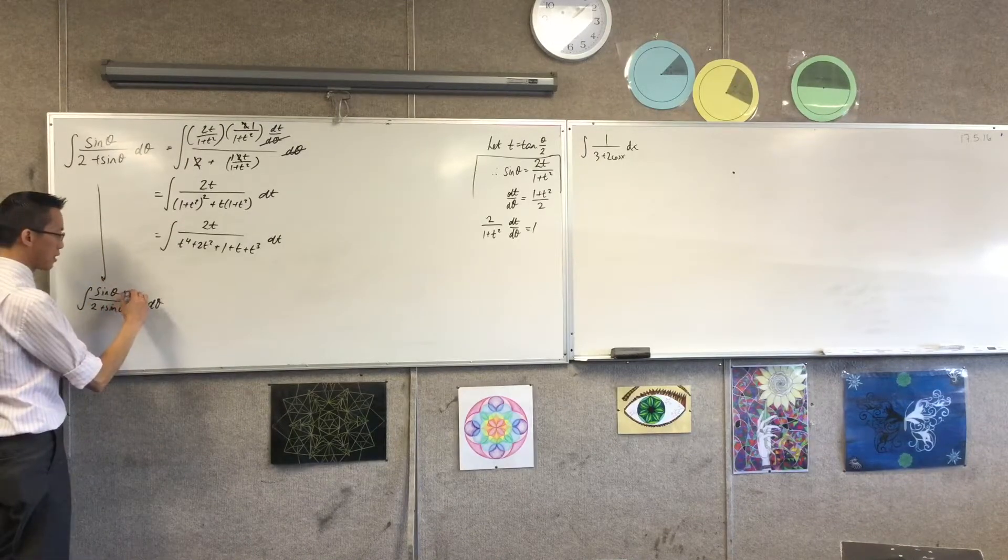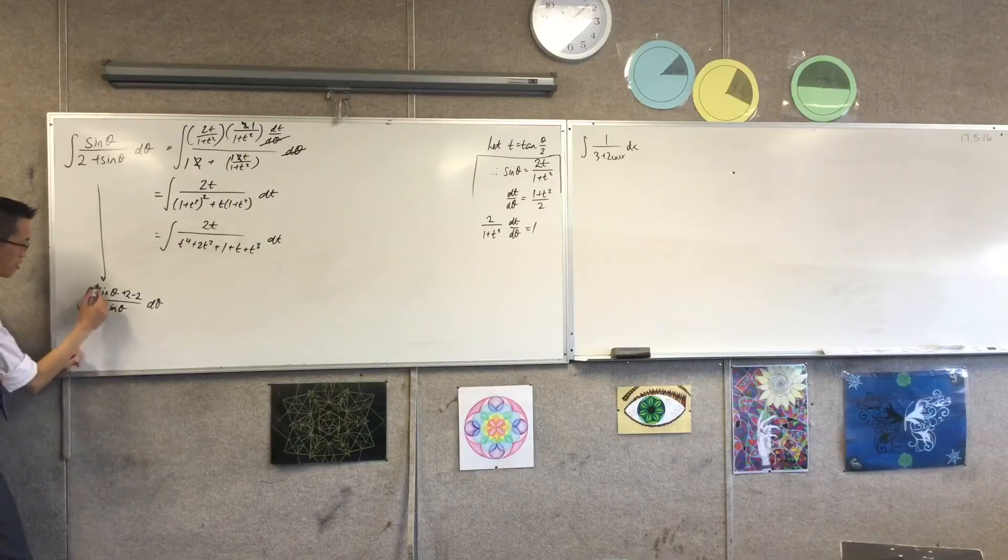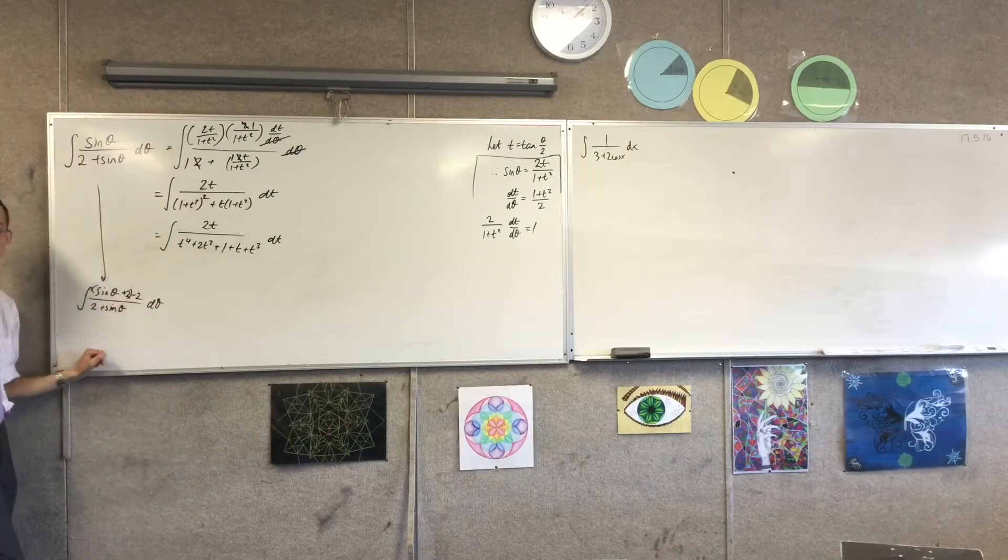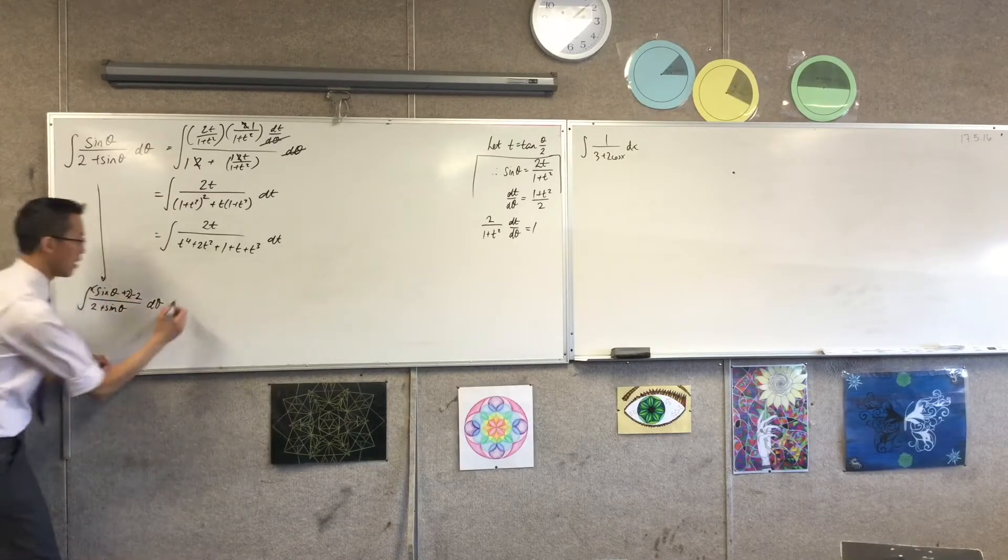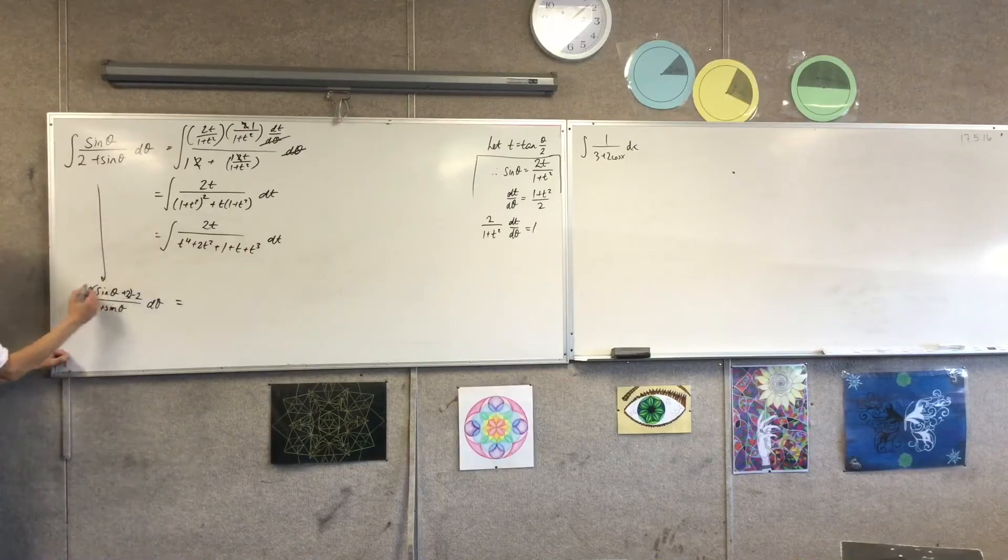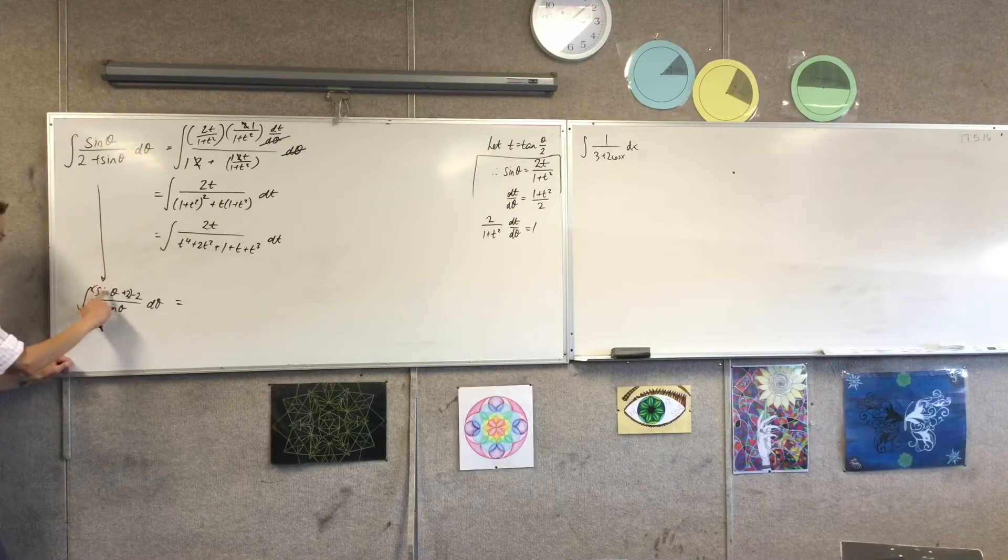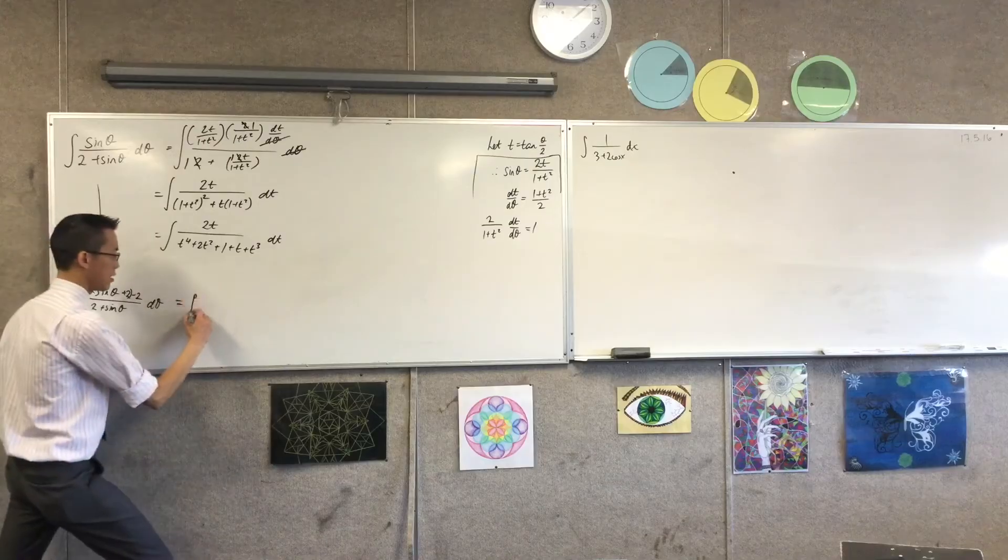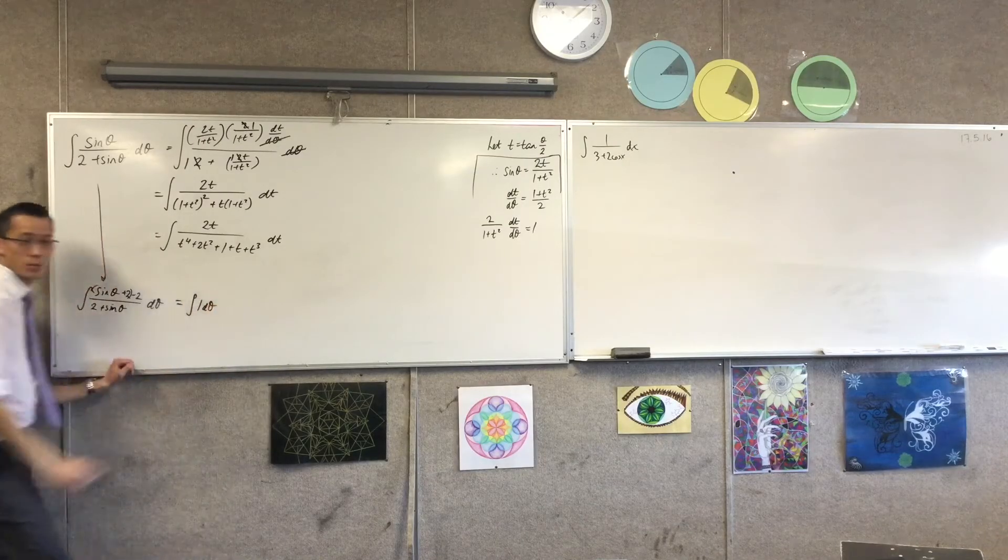So if I write plus 2 minus 2, like so, you can see I can separate this numerator into two pieces. So what I'm going to get here is that first piece is 2 plus sine theta on 2 plus sine theta. So that's the integral of 1 with respect to theta.